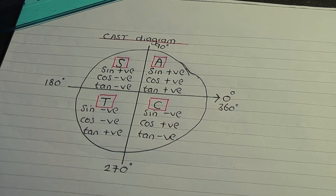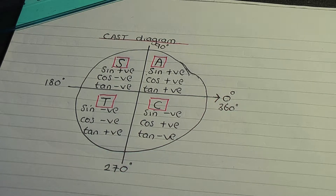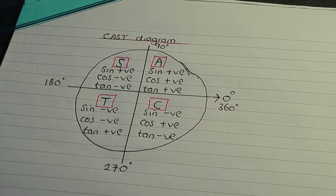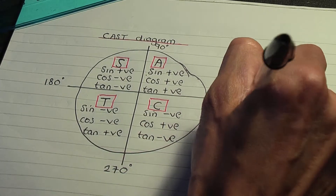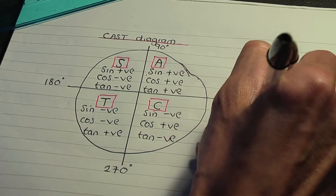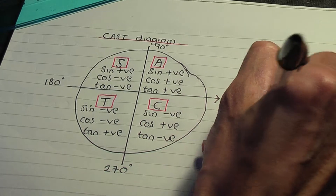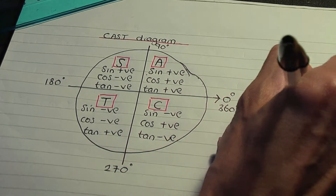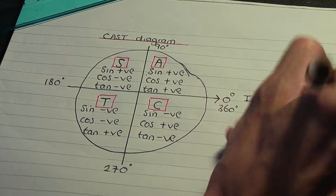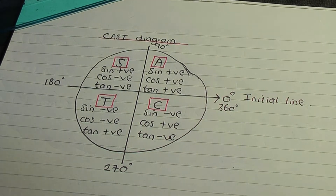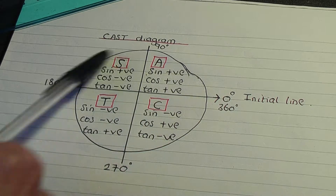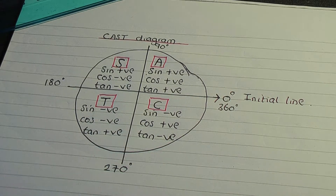Another thing to mention is that we call the zero degree line the initial line. When using the CAST diagram, there are important rules for measuring solutions.